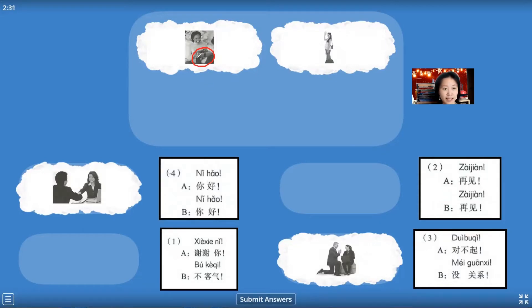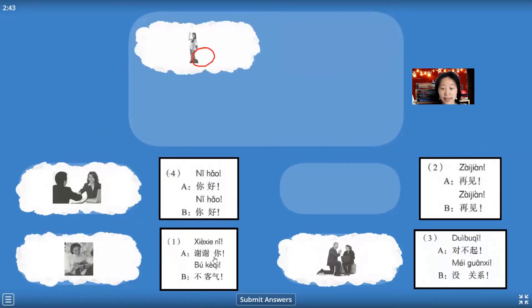And the next one, we just notice about this gift, gift we say li wu. Maybe receive a gift and this time this woman feel very happy. And this time we can say thank you, and another people say you're welcome. This dialogue is xie xie ni, thank you. Xie xie ni, another people say you're welcome, so we say bu ke qi, bu ke qi.